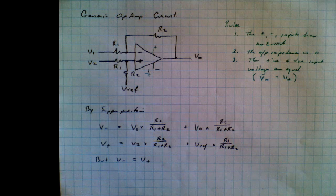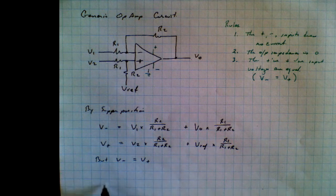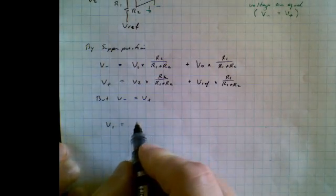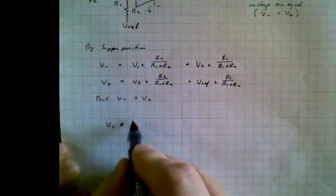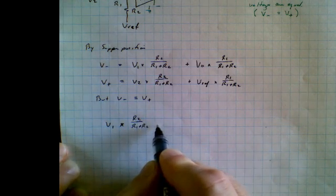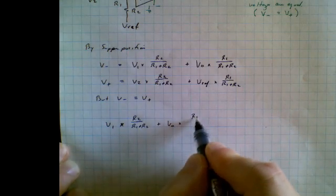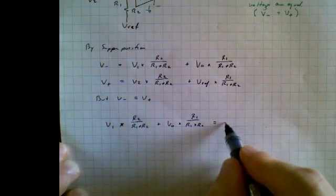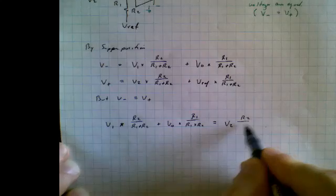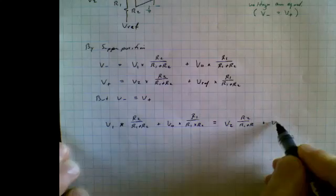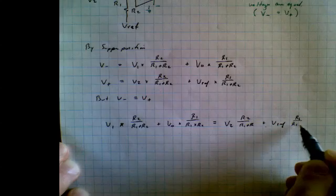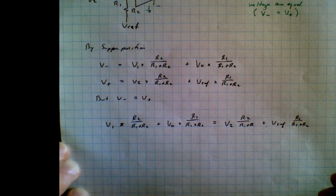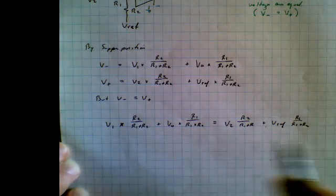So we're going to rewrite this. I should have said this is V1 here. We're going to say now that V1 is equal to V1 times R2 over R1 plus R2 plus VO times R1 over R1 times R2. V1 times R2 is equal to all of this, which is V2 times R2 over R1 plus R2 plus Vref over R1 times R1 plus R2. All right, so right off the back we notice something interesting here. All these denominators are the same and so they cancel right out.